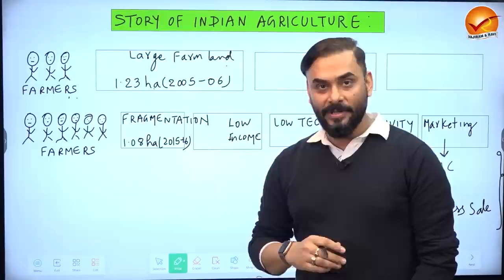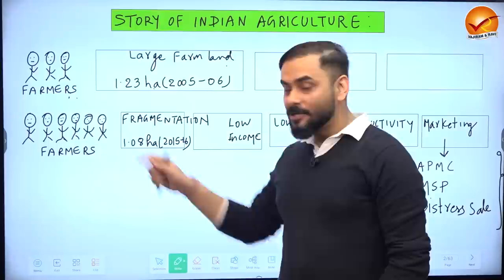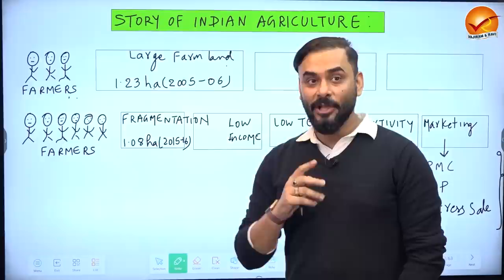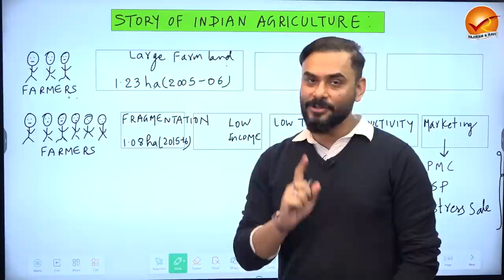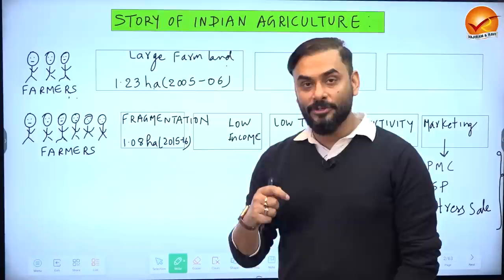When farmers produce a bumper crop, the quality is ordinary and they are forced to sell in local APMC mandis, where their bargaining capacity is weak and they are exploited by middlemen called arhatiyas. Option two is the government's Minimum Support Price program, which covers at least 22 crops. However, only 10 to 13 percent of farmers actually benefit from MSP because the government's coverage is very limited.